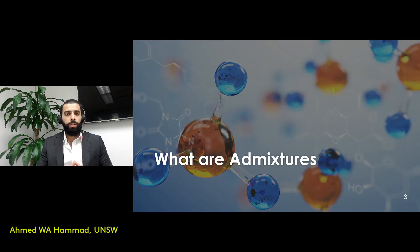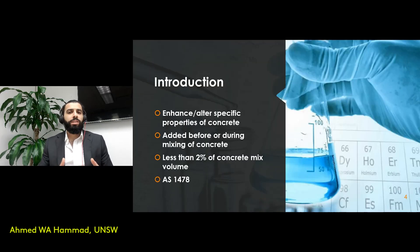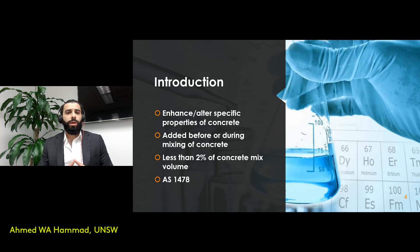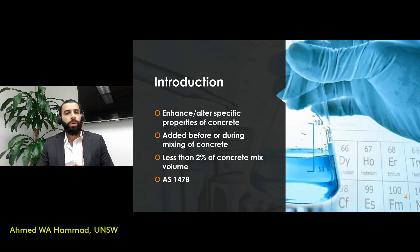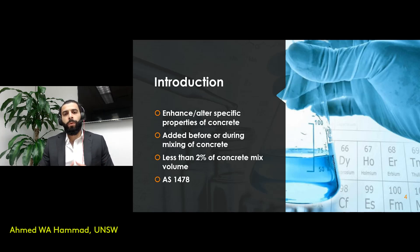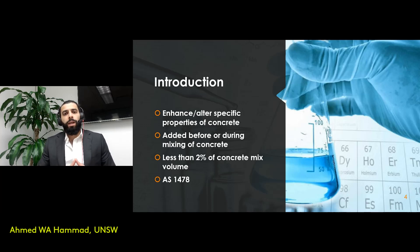Admixtures are chemicals added when we need to change certain characteristics of our concrete mix — for example, when a particular project requires more workable concrete. These admixtures are often added either during mixing with the water, or before water is added, with the powder cement. From a volume perspective, admixtures form less than 2% of the overall concrete mix. In Australia, the types of admixtures available and their permitted applications are specified in AS 1478.